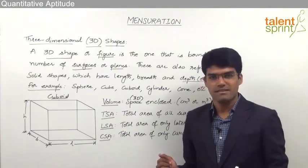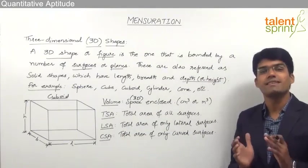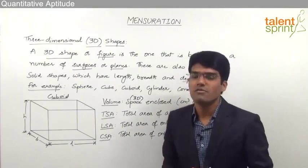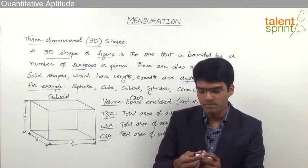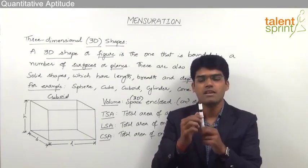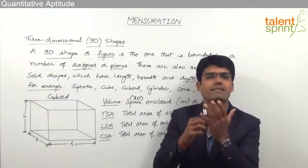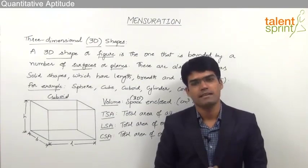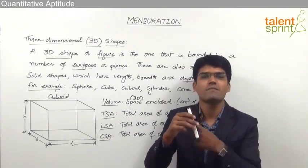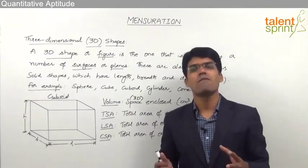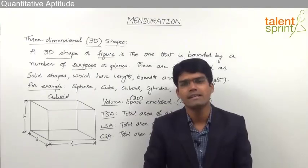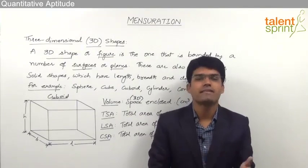The last type is curved surface area. In those solid shapes where there is a curved surface, the total area of only those curved surfaces is referred to as curved surface area. For example, in a cylinder, the base is a circle, the top is a circle, and there is a curved surface. The area of the curved surface surrounding the cylinder is the curved surface area. The total surface area would be the area of the base plus the area of the top plus the area of the curved surface. So, total surface area is the total of all surfaces, curved surface area is the total area of only the curved surfaces, and lateral surface area is the total area of only the lateral surfaces.